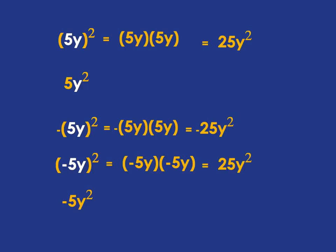In the last one, it's just the y that is being squared. So what we've got is negative 5 multiplied by y multiplied by y, and that's just negative 5y squared.